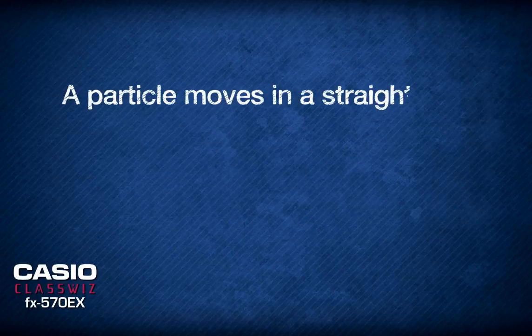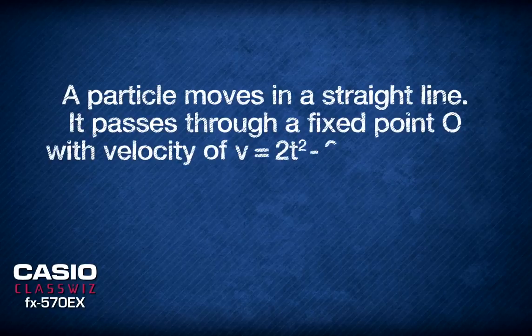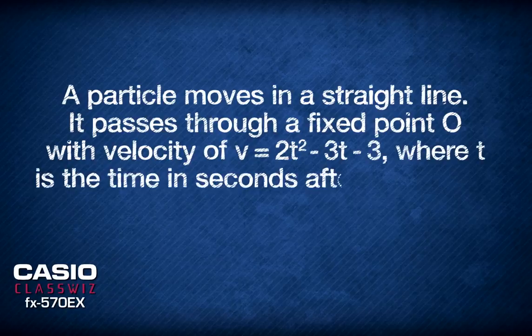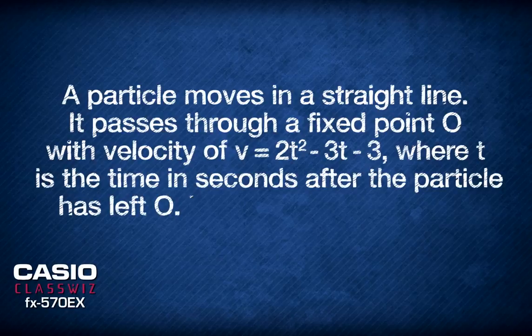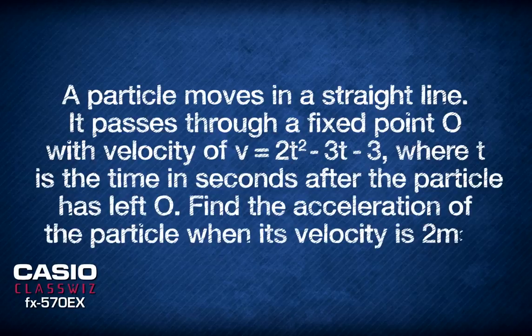Alright, now this time the question goes: a particle moves in a straight line. It passes through a fixed point O with velocity of v equals 2t squared minus 3t minus 3, where t is the time in seconds after the particle has left O. Find the acceleration of the particle when its velocity is 2 meters per second.